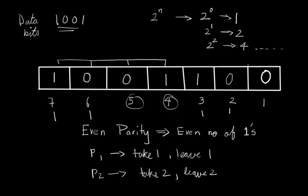So in similar way for p4 you can guess that we have to take 4, 5, 6, 7, and if there are any more bits in your data, then you need to leave 8, 9, 10, 11, and then again consider 12, 13, 14, 15.